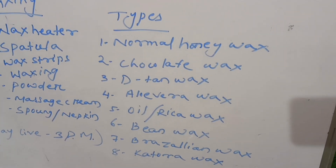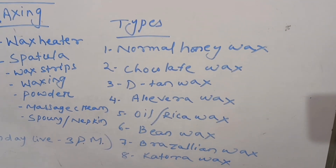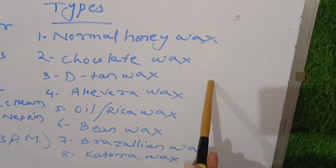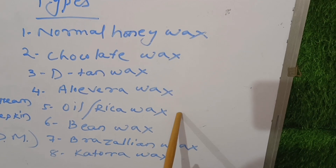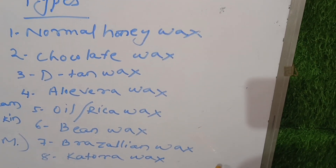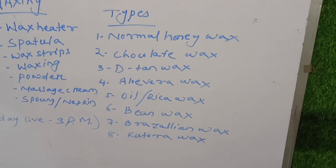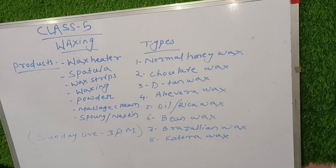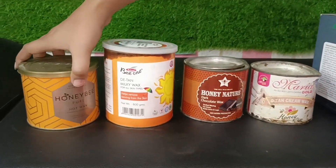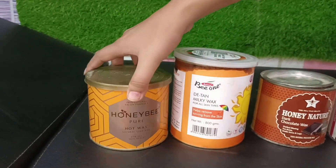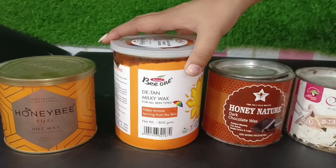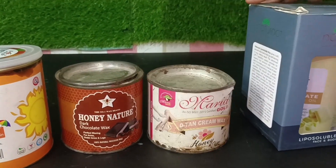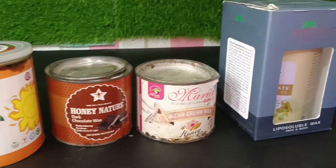I will tell you the practical details of how each wax is done. For normal wax, chocolate, detain, and aloe vera — these four processes are the same, which I will tell you today. Oil wax is a different process, bean wax is a different process, and Brazilian wax is a different process — I will cover those later. Normal wax varieties include honey bee wax, white chocolate wax, dark chocolate wax, and detain wax.